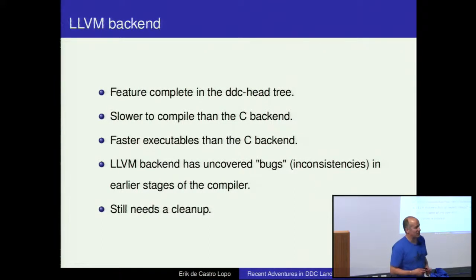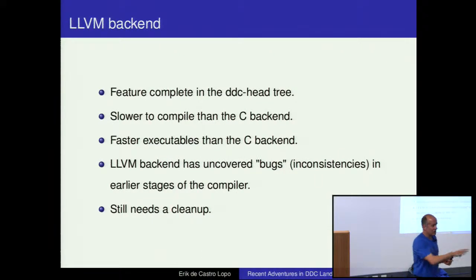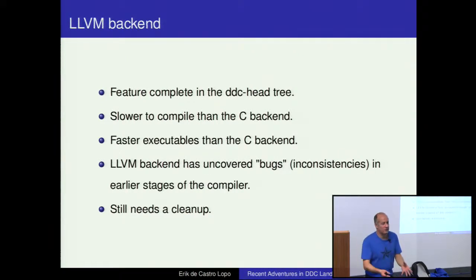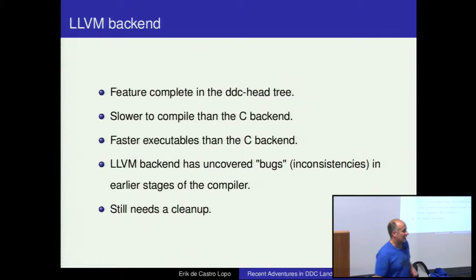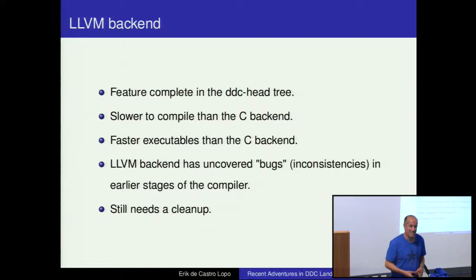Doing this LLVM back end has been quite interesting in that it's uncovered some bugs and inconsistencies in the compiler. Specifically, back when Ben was working on it as part of the PhD thesis, it pretty much assumed that everything was a boxed object. Later on, things like unboxed values were added, and there are places in the compiler where it assumes something is an object where it's actually not. LLVM, being a strongly typed assembly language, really spits the dummy when you throw it rubbish. The C back end will just accept it, where the LLVM back end says no.